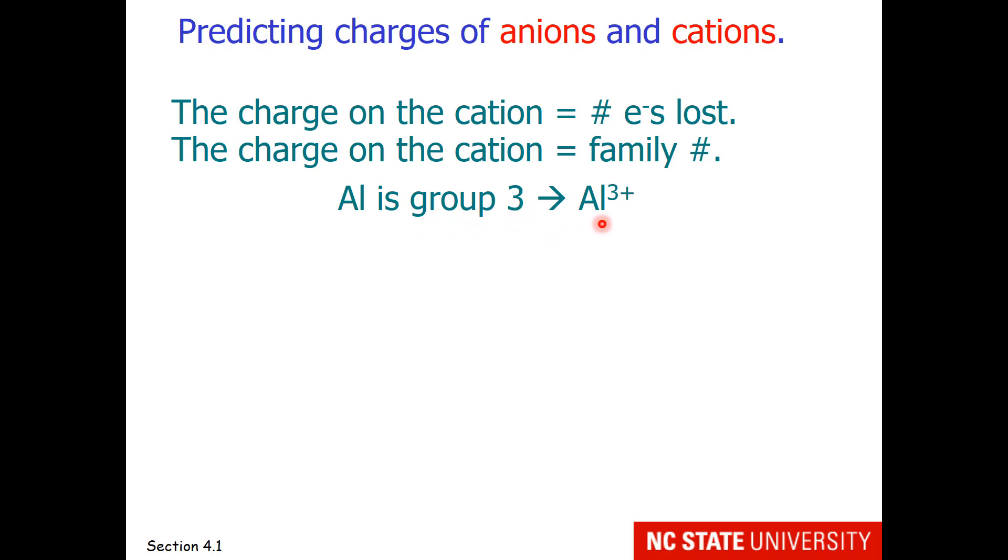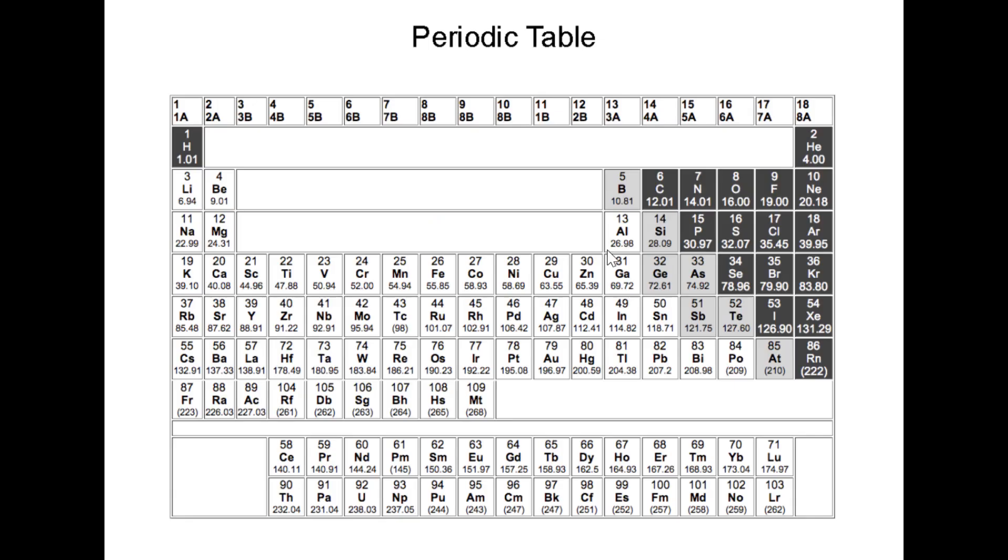So it becomes aluminum 3+. Let's visit the periodic table a moment. We can see that aluminum is indeed in group 3. So if we remove 1, 2, 3 electrons, it will have the same electron configuration as neon.